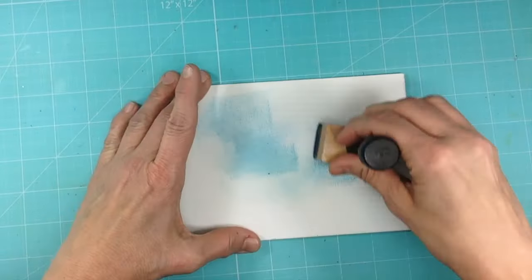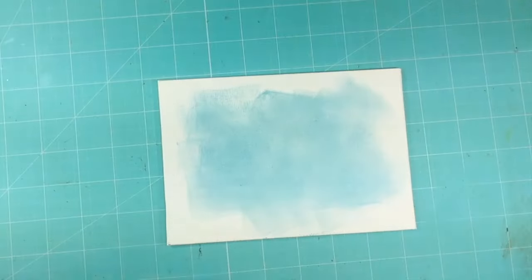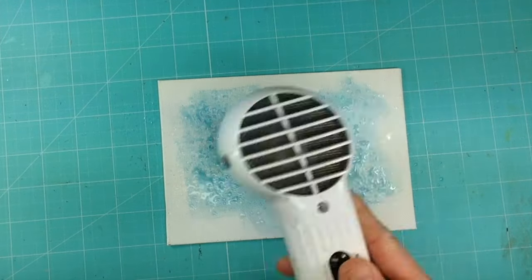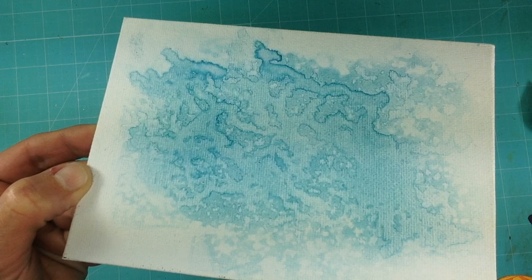Moving on to the canvas, I dabbed some distress ink on the 5x7 canvas and I sprayed it lightly with some water. I dried it with a heat gun and the result is a nice soft flowing background.